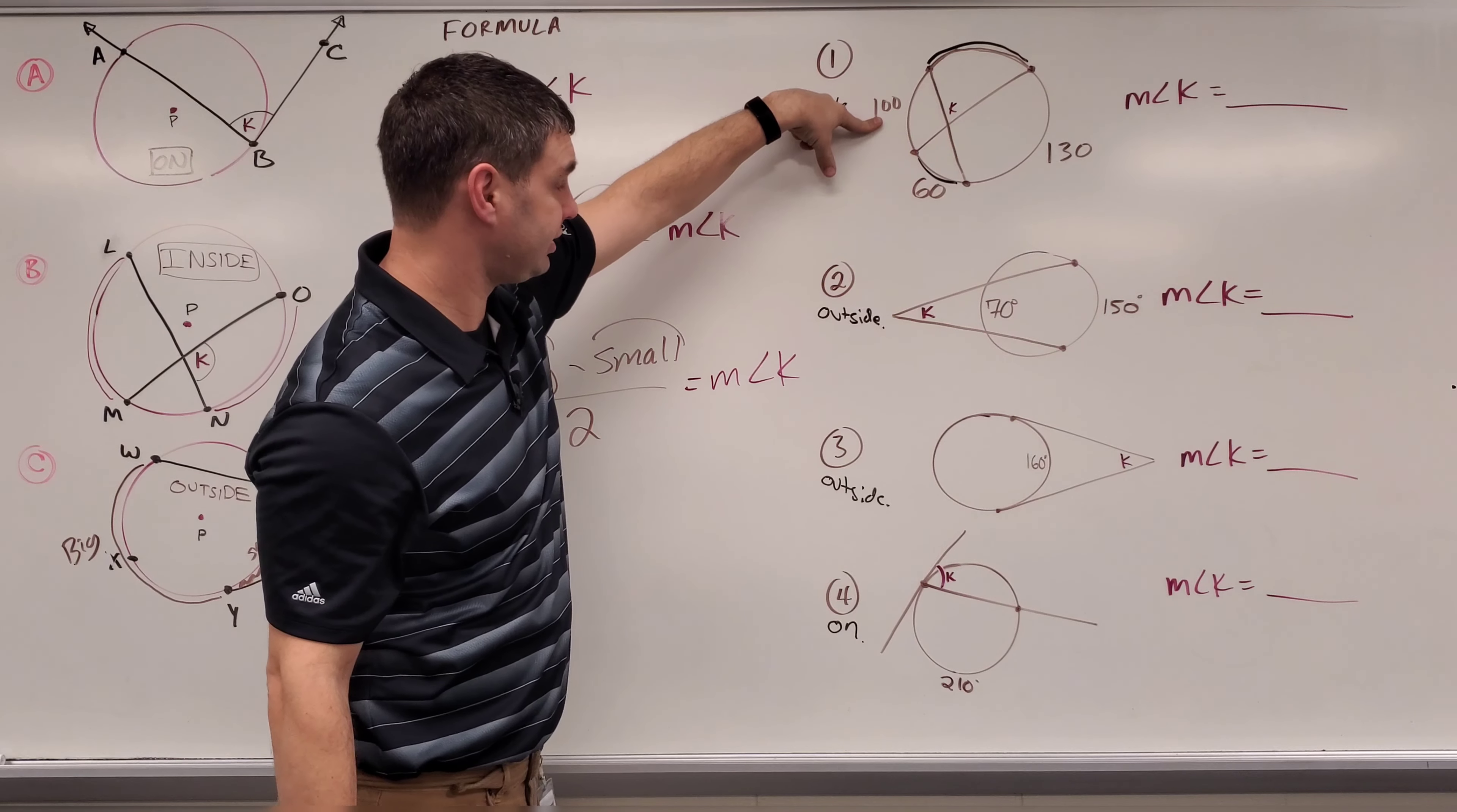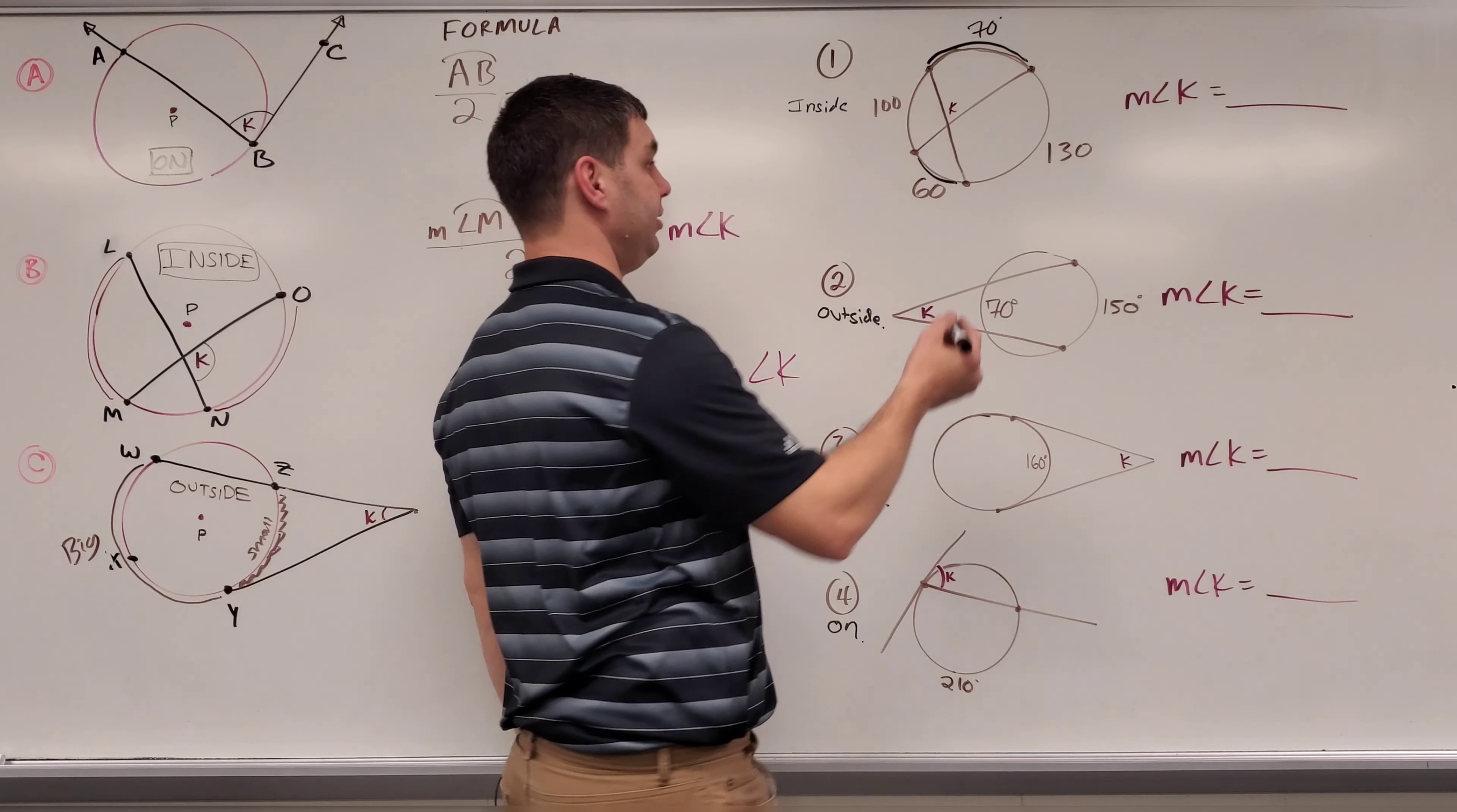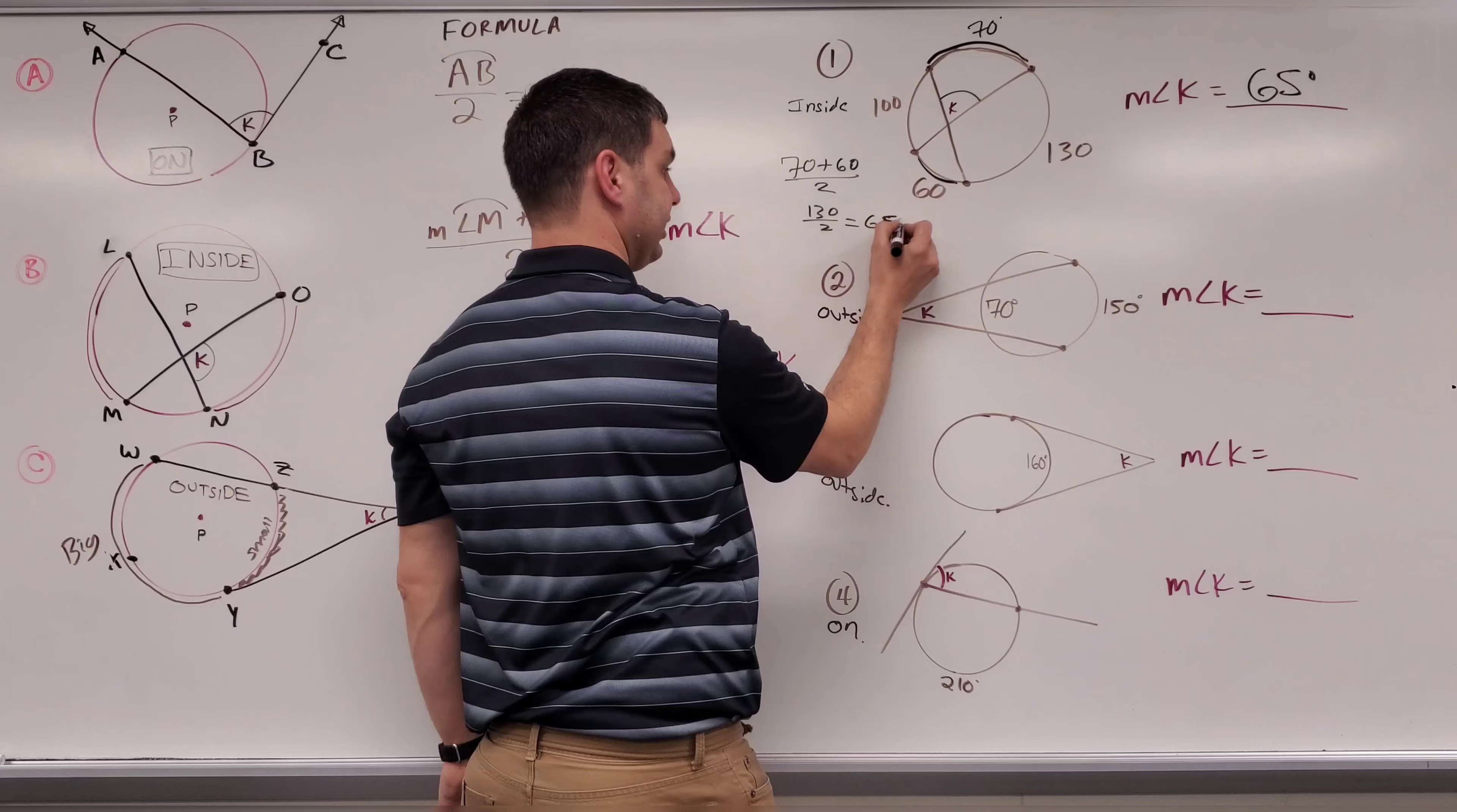Let's try it. 360 minus 100 is 260, minus 60 is 200, minus 130 gets me down to 70 degrees for that arc. So now, if you want to add those together, you get 130, divide that by two, that's going to be 65 degrees for angle K right there. Again, we can take 70 plus 60, divide by two, or 130 divided by two, which is our 65.